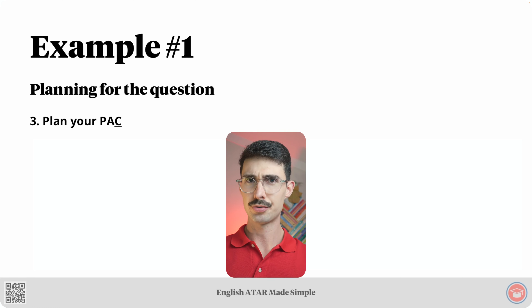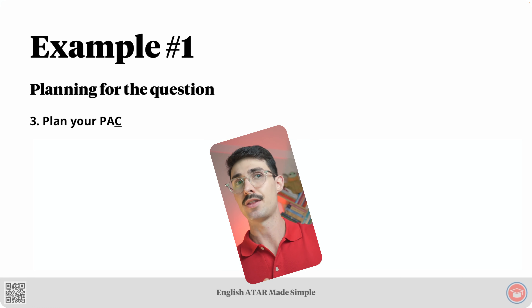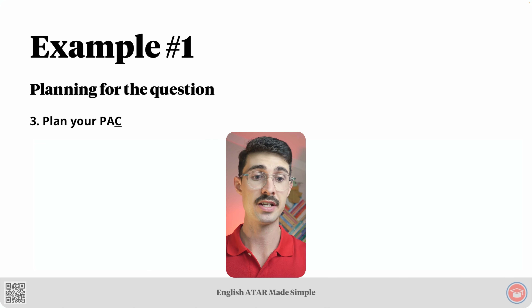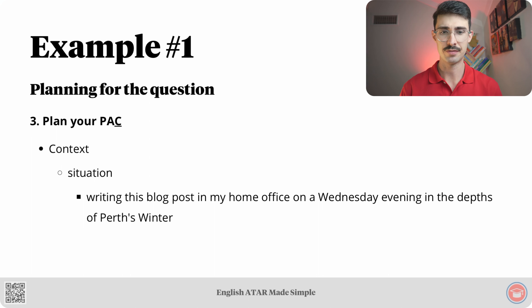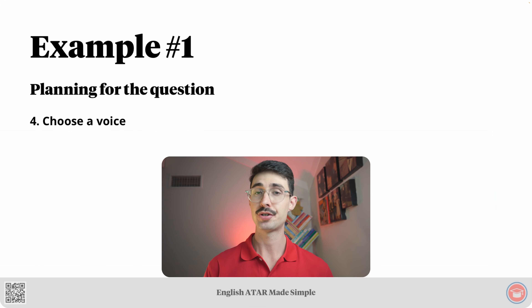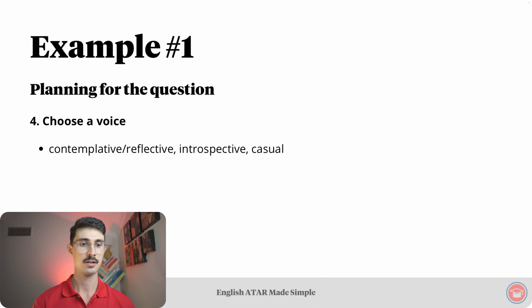Here is the situational context — in other words, the situation in which I will be writing the blog post. That situation is: I'm writing the blog post in my home office on a Wednesday evening in the depths of Perth's winter. Step four: choose a voice. I've decided I want to have the following personality in my blog post: contemplative and reflective, introspective and casual.